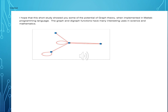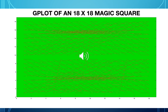I really hope this short study helped you a little in understanding the true potential of graph theory. When you implement it in MATLAB using graph and the digraph functions, or even gplot, you can find it has many uses in science and mathematics. I just want to leave you with this one gplot graph of an 18-by-18 magic square, which gives an idea of the symmetry in those wonderful mathematical objects.